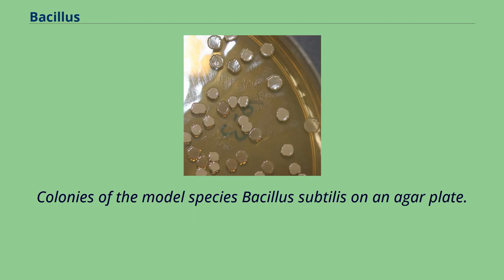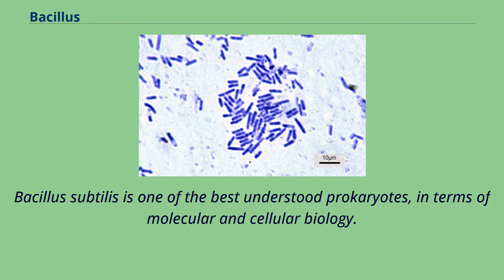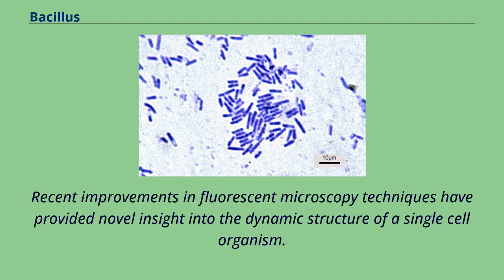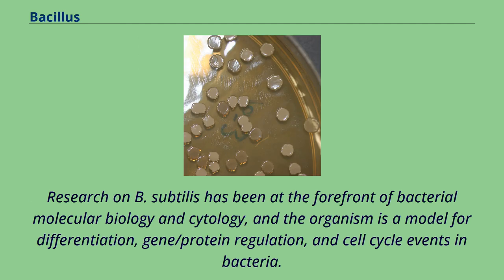Colonies of the model species Bacillus subtilis on an agar plate. Bacillus subtilis is one of the best understood prokaryotes in terms of molecular and cellular biology. Its superb genetic amenability and relatively large size have provided the powerful tools required to investigate a bacterium from all possible aspects. Recent improvements in fluorescent microscopy techniques have provided novel insight into the dynamic structure of a single-cell organism. Research on B. subtilis has been at the forefront of bacterial molecular biology and cytology, and the organism is a model for differentiation, gene/protein regulation, and cell-cycle events in bacteria.